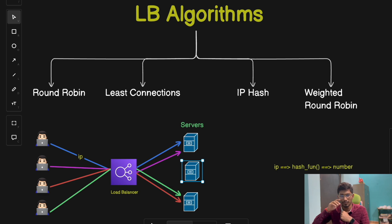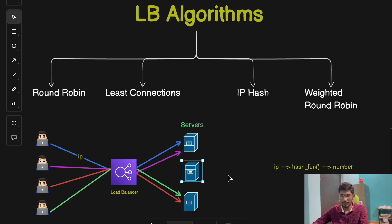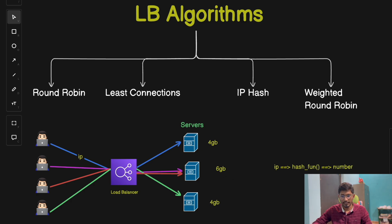Lastly, we have the weighted round robin algorithm — a twist on the basic round robin. Each server is assigned a weight based on its capacity. For example, a more powerful server might handle two requests for every one request sent to a less powerful server. This allows the load balancer to account for capacity differences between servers. If two servers have 4 GB RAM and one server has 6 GB RAM, the higher-capacity server will receive proportionally more requests.